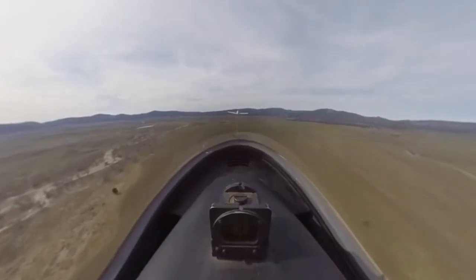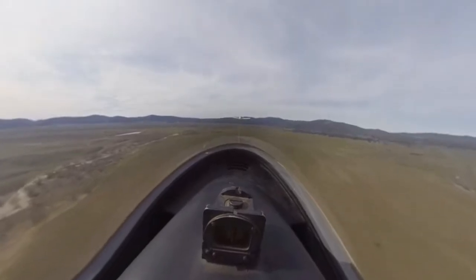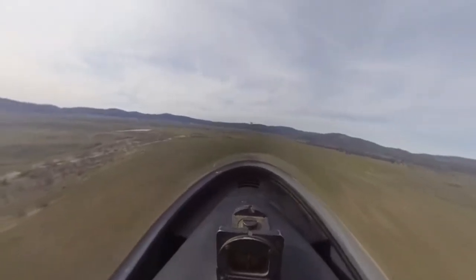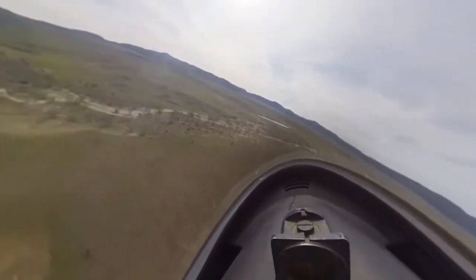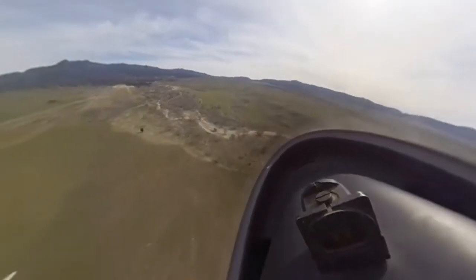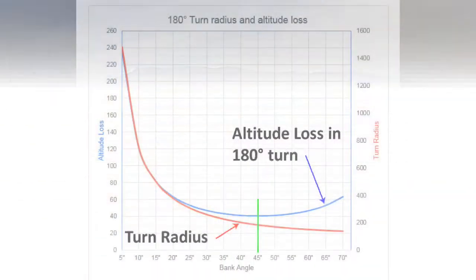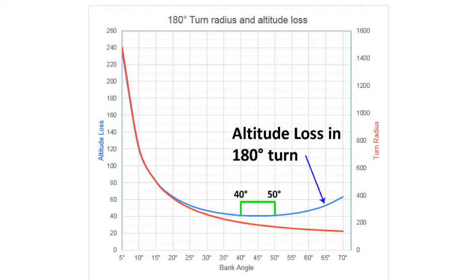The good news is that higher bank angles generate smaller radius turns, and we definitely want that to stay within the confines of a thermal or to make a small radius turn back to the runway in case of a low-altitude rope break. Now let's look at how turn radius plots against these other factors. We can see here that the 45-degree bank gives us the least altitude loss in a turn. The difference between that and 40 or 50 degrees is minimal, which relates back to the checkride performance standards of 5 degrees very nicely.